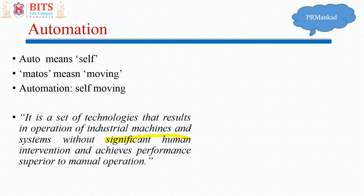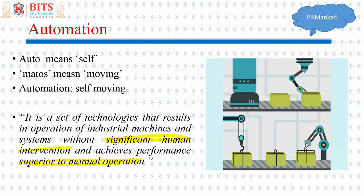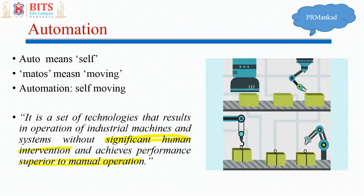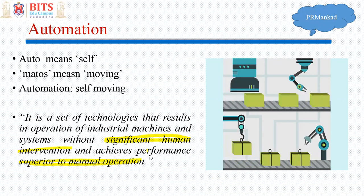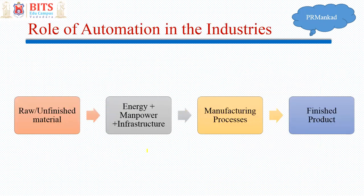The keyword is that human intervention is not there, and it achieves performance superior to manual operation. So automation is a set of technologies that results in operation of industrial machines without human intervention and achieves performance superior to manual operation. As you can see in the GIF on the right side of the screen, these machines are working on their own with no human intervention, and working better than what humans can do.